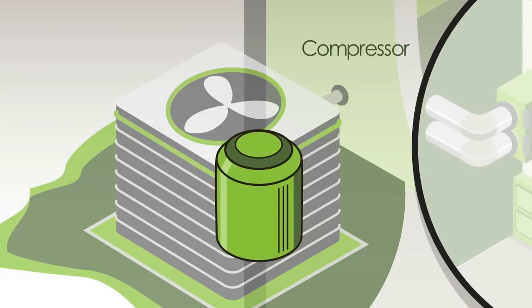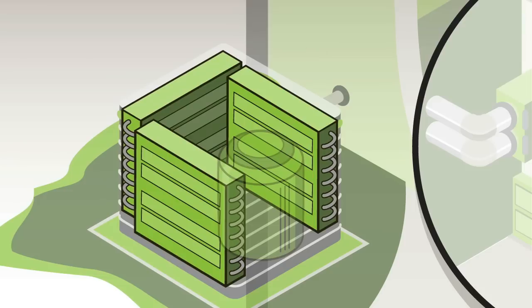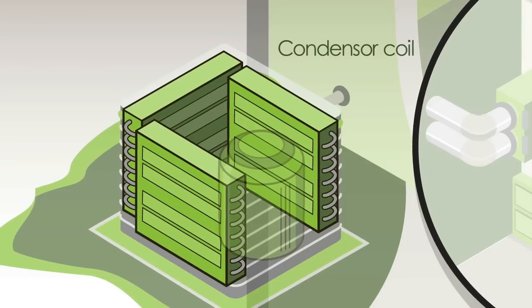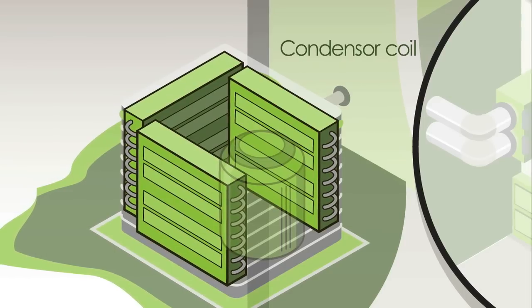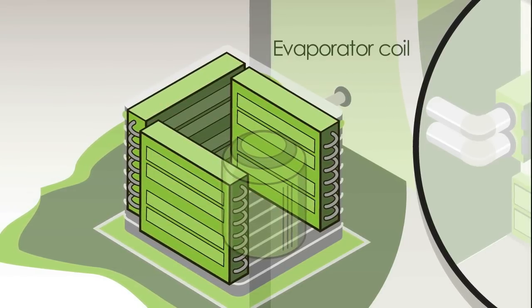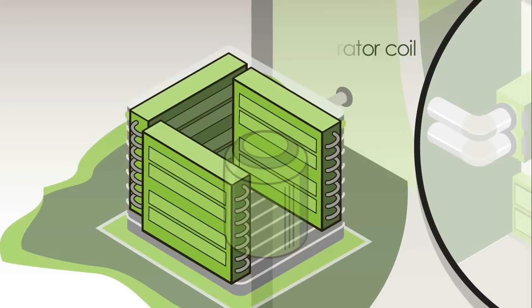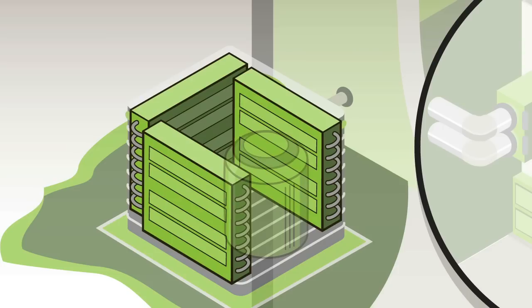A compressor, located in the unit outside your home. The condenser coil, also in the outdoor unit, which will now act like an evaporator coil when heating your home. And the indoor evaporator coil, usually installed near your furnace or inside your air handler, which will now act as the condenser coil when your home is being heated.